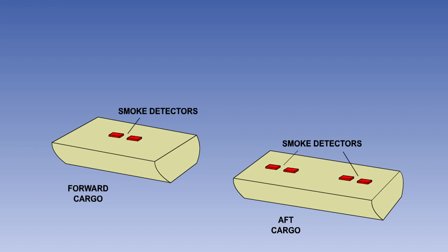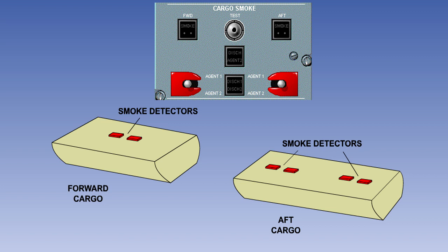If the compartment is large, a number of pairs of detectors may be used. A typical cargo compartment and smoke warning panel is shown here. We will go through the sequence of events which will occur in the case of an aft cargo smoke warning.